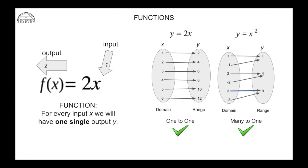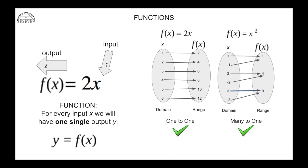When talking about functions, instead of using y we use the term f(x) — f with x inside the brackets — meaning it is a function of x. We can put f(x) wherever we see y, so y = f(x). This tells us that this type of relation is in fact a function, meaning there is only one output for every input — only one f(x) value, only one y value, for every input.